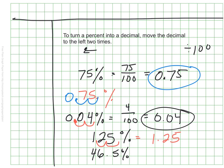Lastly, let's say 46 and a half percent. If I move that decimal once, twice, it ends up with the decimal out front: 465 thousandths, or 0.465.